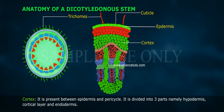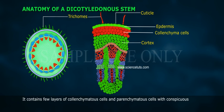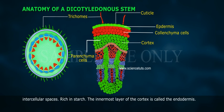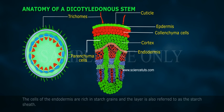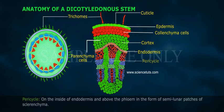Cortex is present between the epidermis and pericycle. It is divided into three parts: hypodermis, cortical layer, and endodermis. It contains a few layers of collenchyma cells and parenchyma cells with conspicuous intercellular spaces rich in starch. The innermost layer of the cortex is called the endodermis.